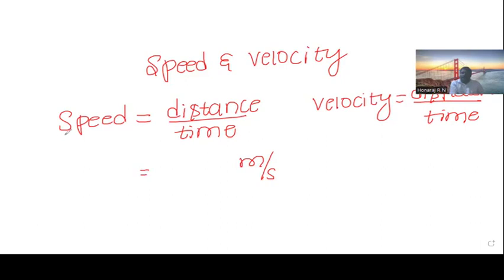But speed is a scalar quantity. Velocity is a vector quantity. This is about speed and velocity.